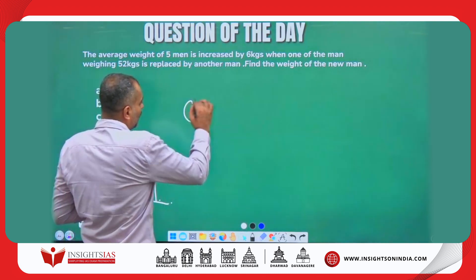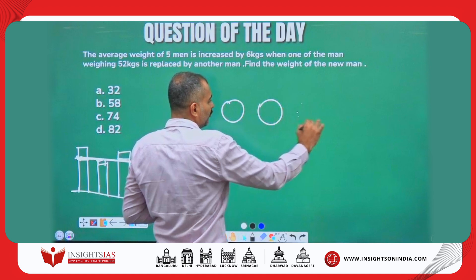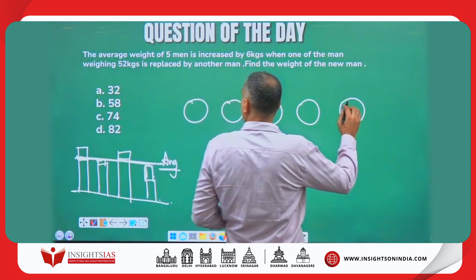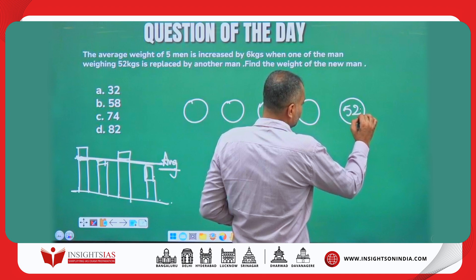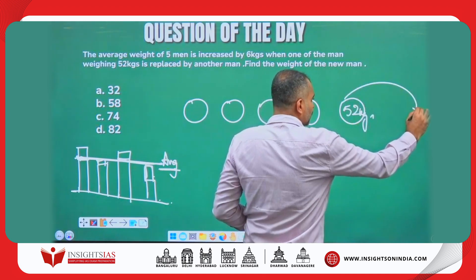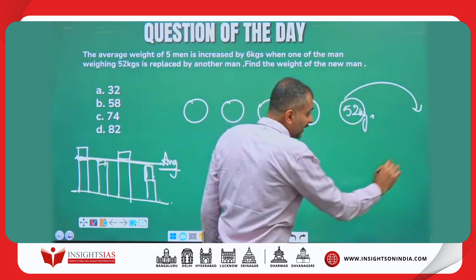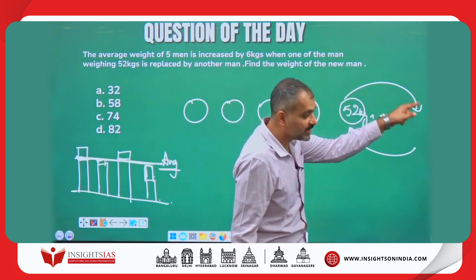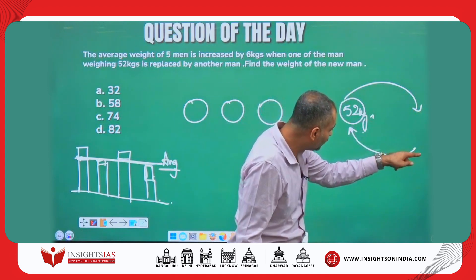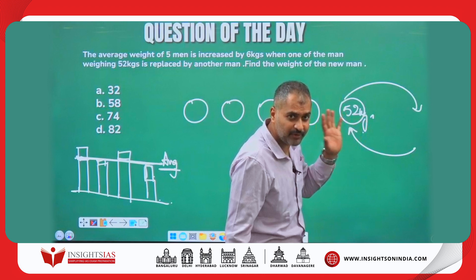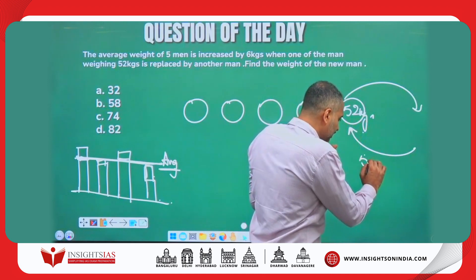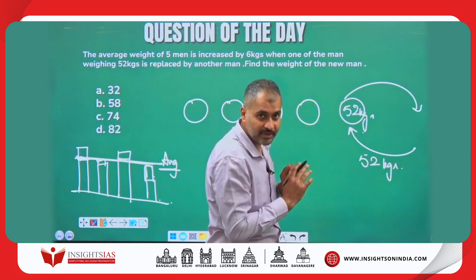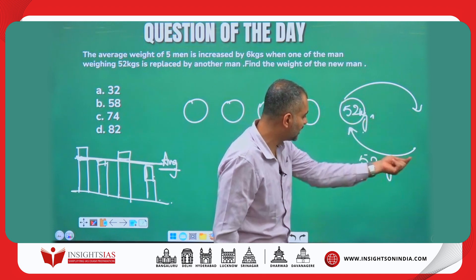Now, five men are there — one of the men weighing 52 kgs is going out, replaced by another man. So 52 kgs is going out. If the same 52 kgs were also coming in, there would be no change in the average.